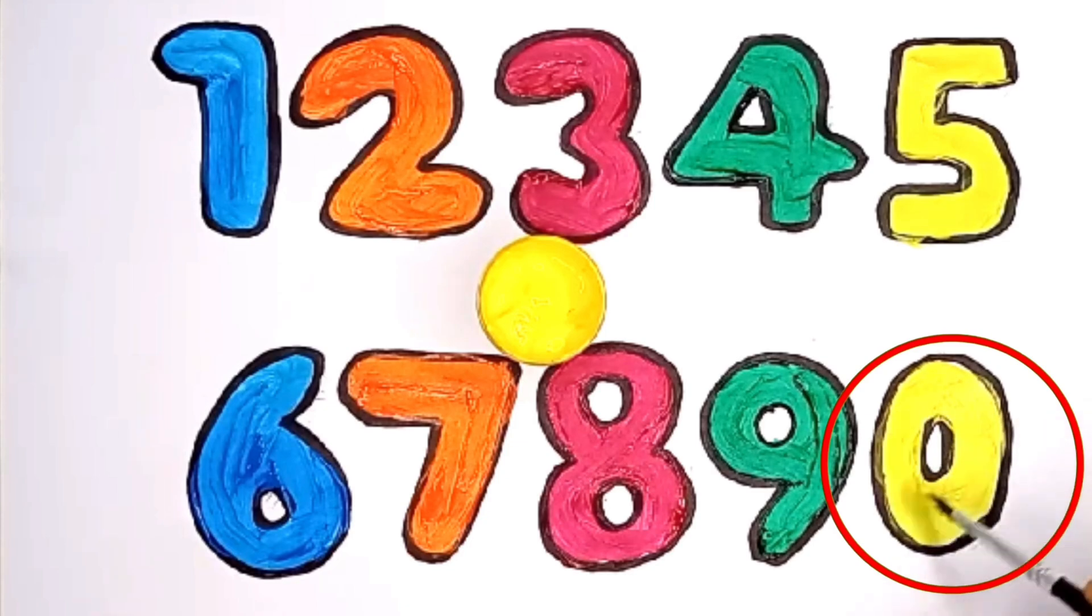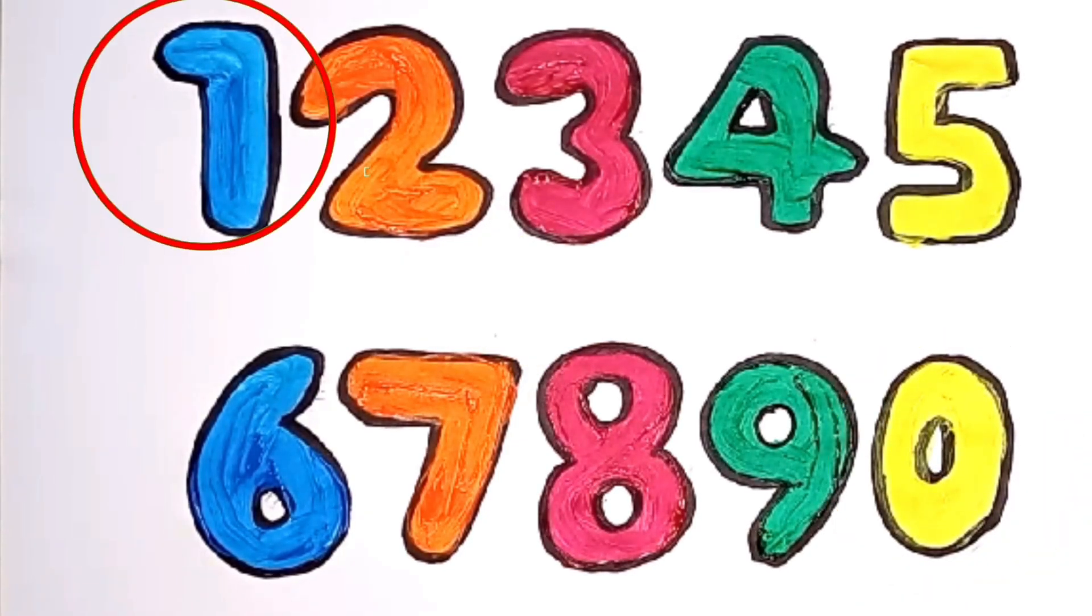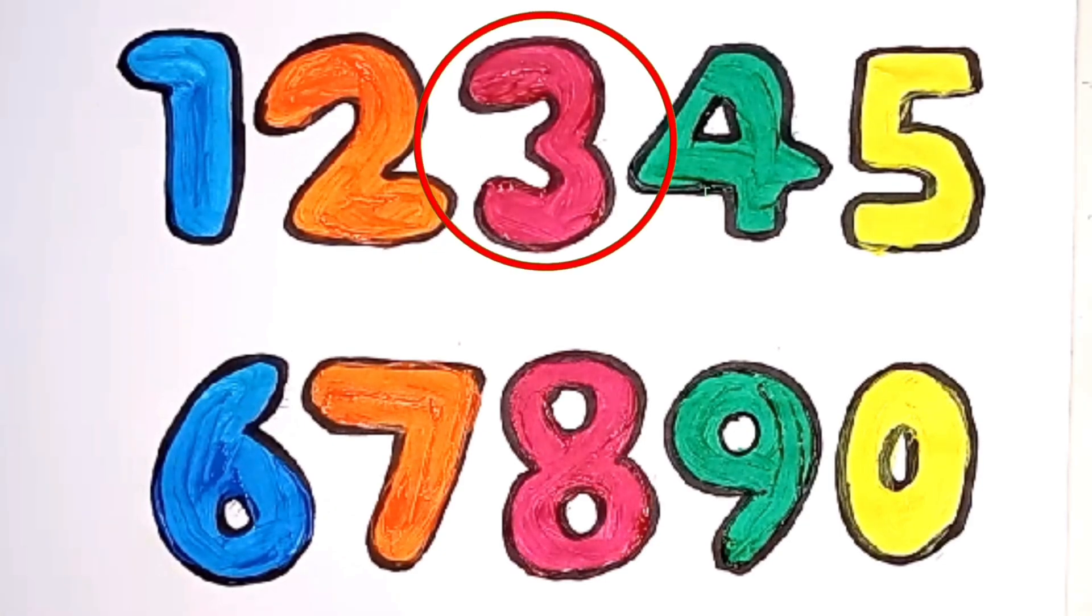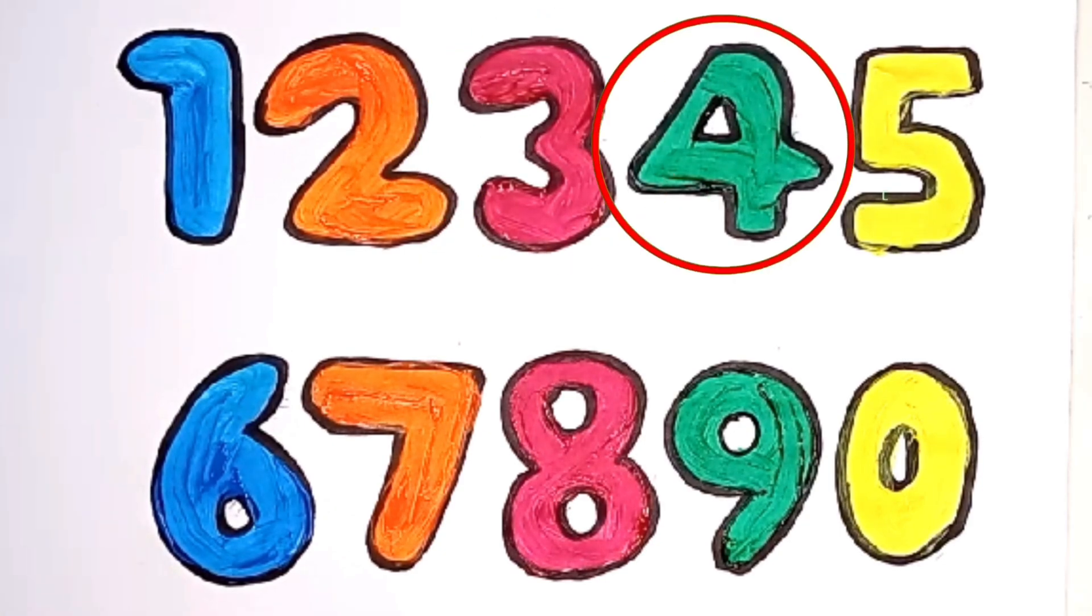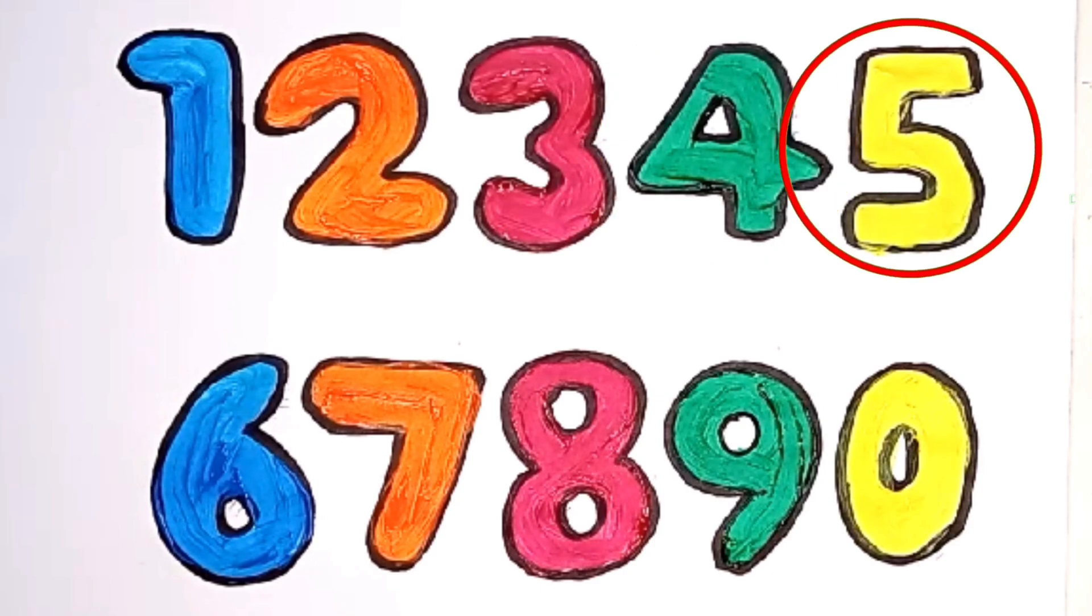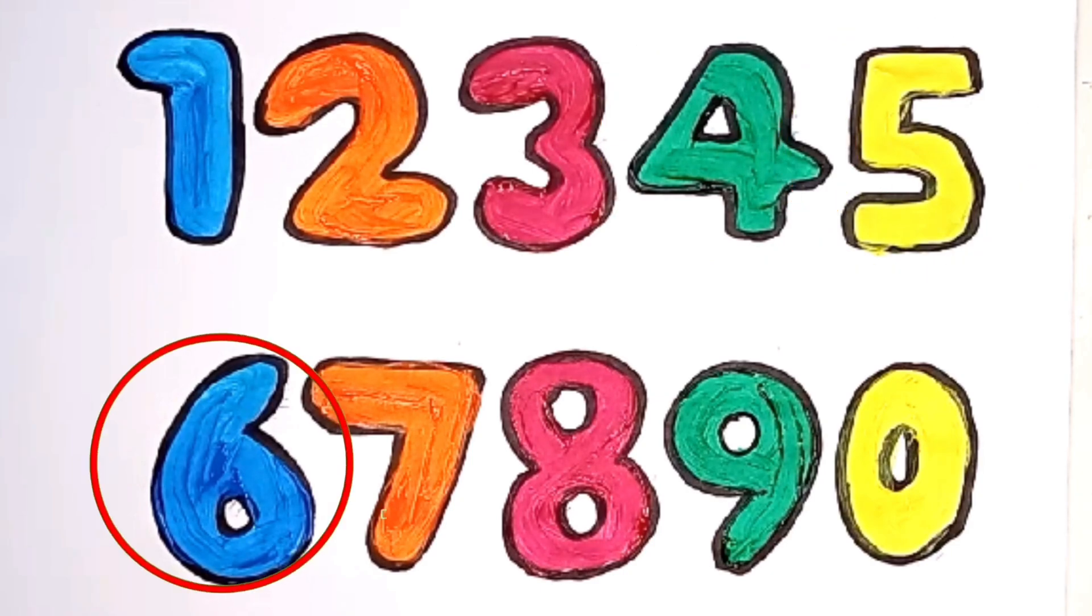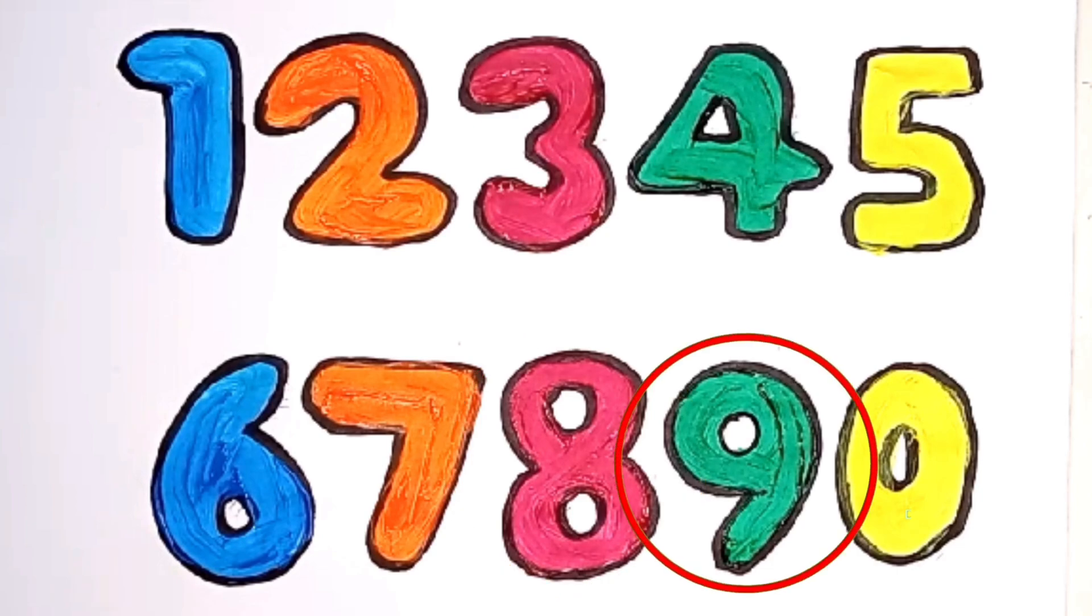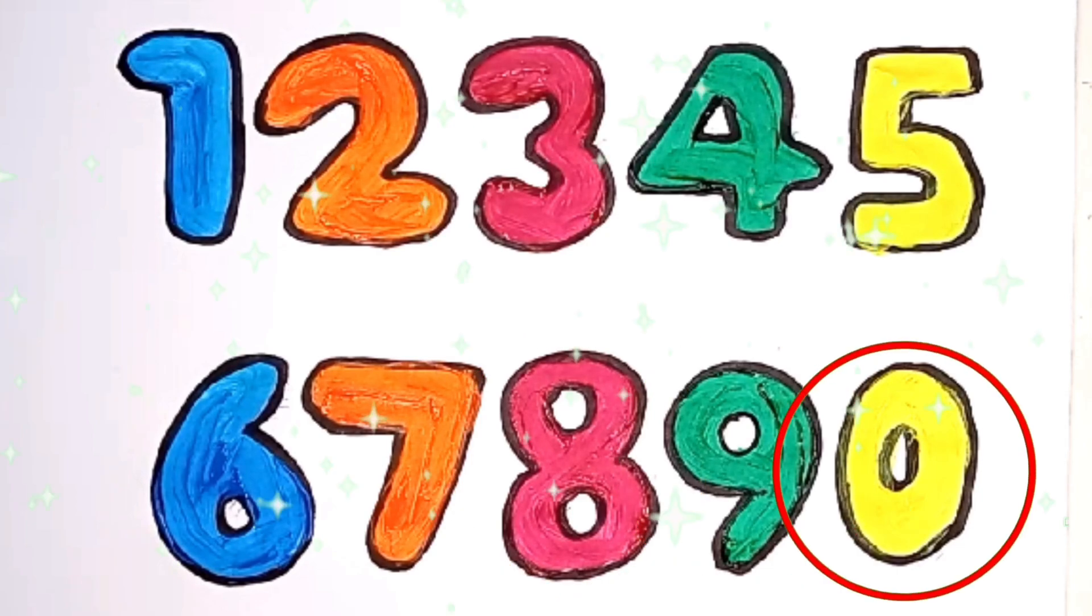Zero. One. Two, three, four, five, six, seven, eight, nine, zero. One.